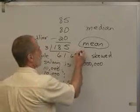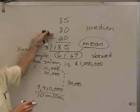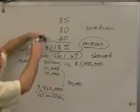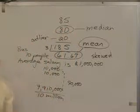But the median, if we put them in order and find the middle score, the median of these three test scores is 80, isn't it?